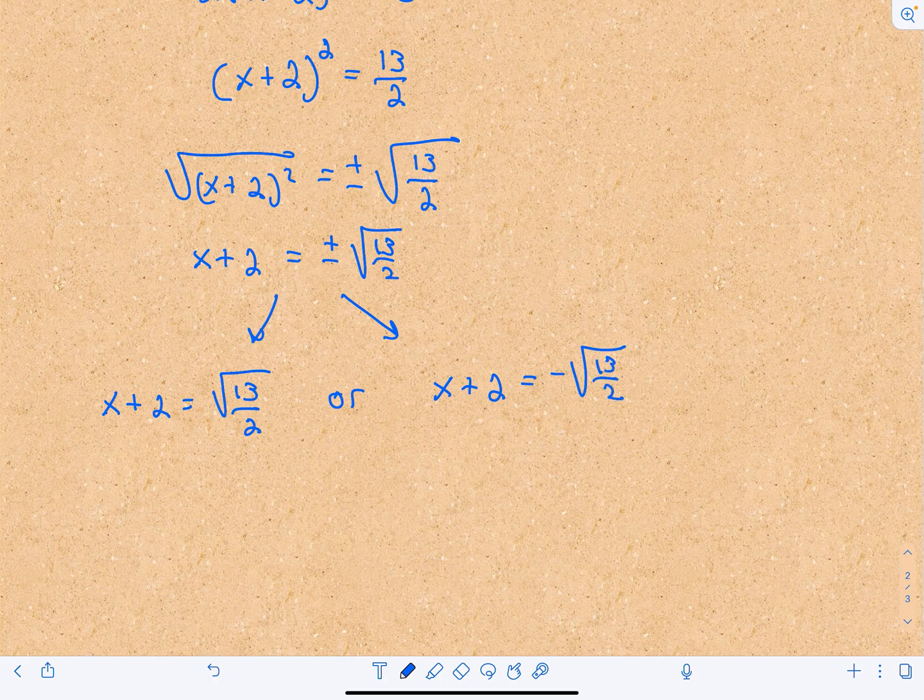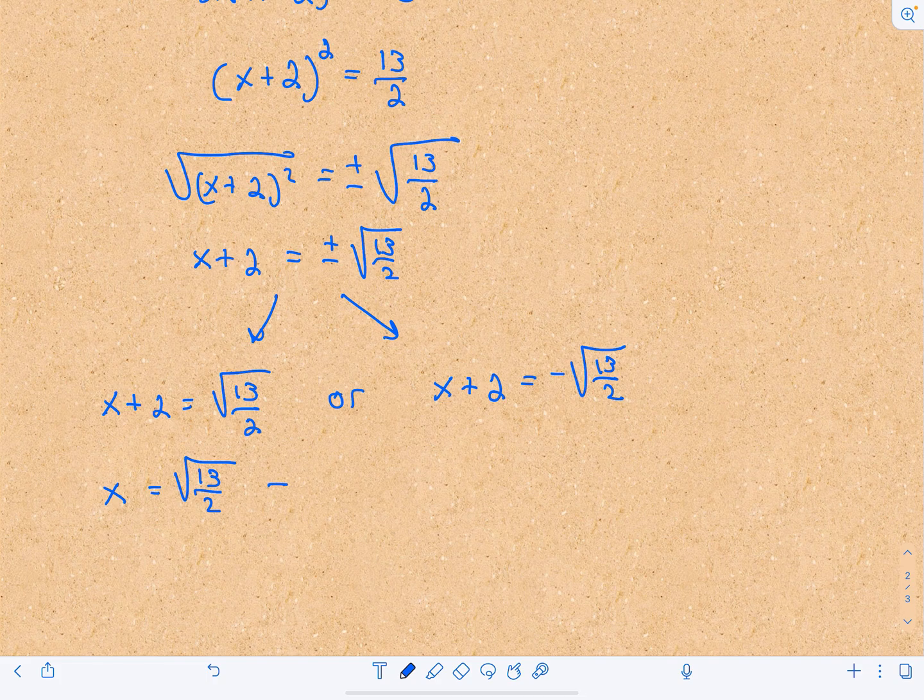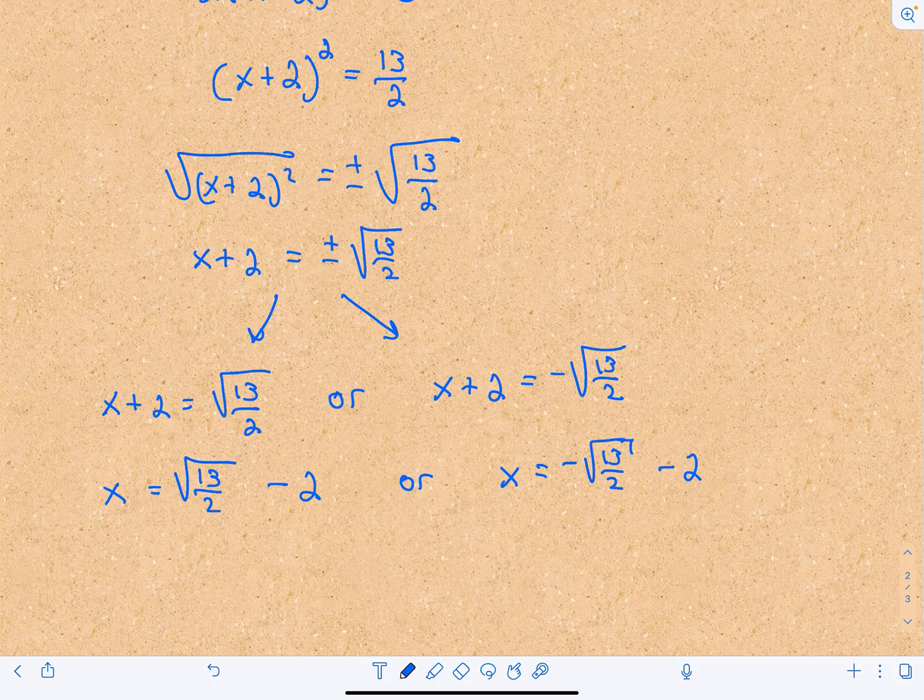In both cases I'm going to subtract 2. So I'll have x = √(13/2) - 2, or my other solution will be x = -√(13/2) - 2. Those would be my two solutions.